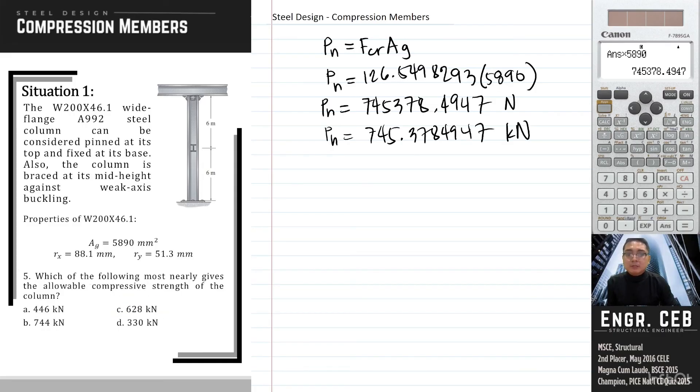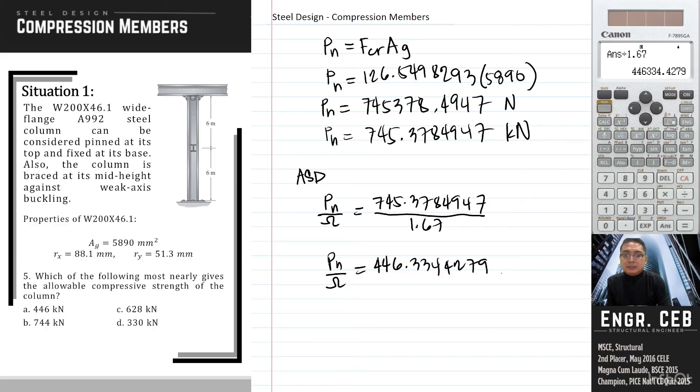Problem 5: Which of the following most nearly gives the allowable compressive strength of the column? For the allowable compressive strength, it means that we will use ASD. We just need to divide P sub N by the factor of safety. The factor of safety for compression members is 1.67. Therefore, the allowable compressive strength is 446.334 kN.